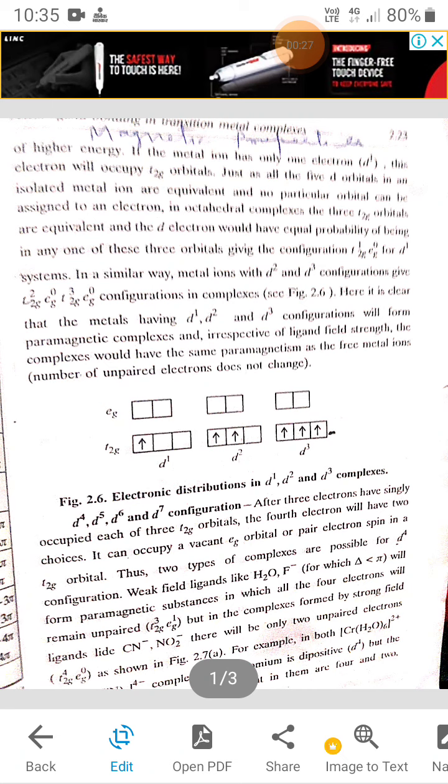D2 and D3 configuration in complexes of this geometry, there are 1 electron, 2 electron and 3 unpaired electrons.